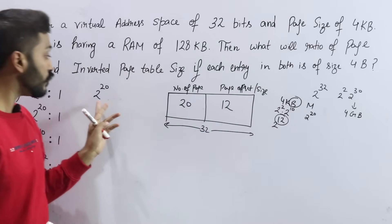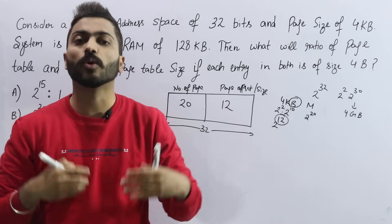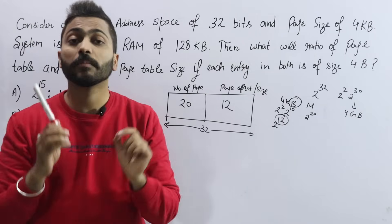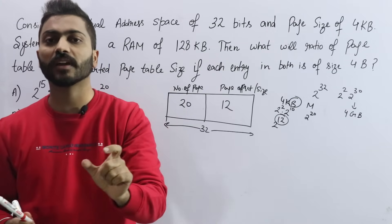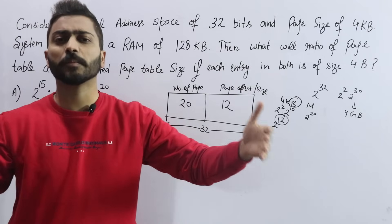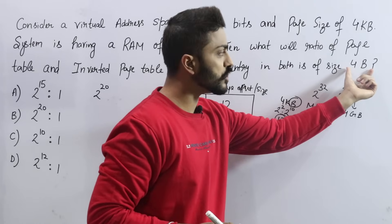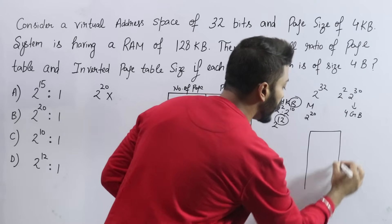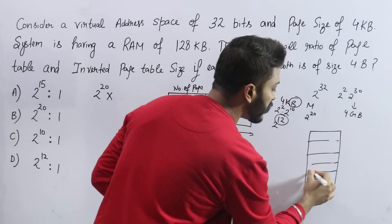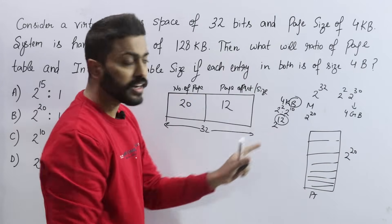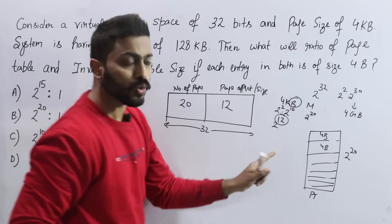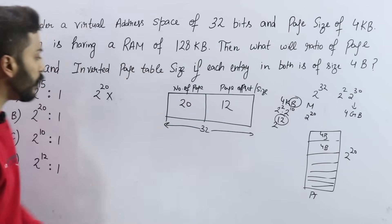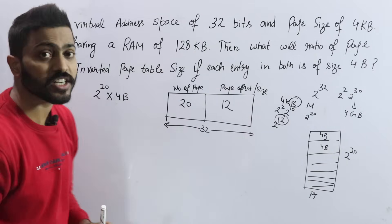So we have 2^20, meaning 1 mega pages. In each page table entry, the main value stored is the frame number — where the actual page is located. Besides that, there are valid bit, reference bit, and many other values. The entry size given in the question is 4 bytes. So total page table size = 2^20 entries × 4 bytes per entry.